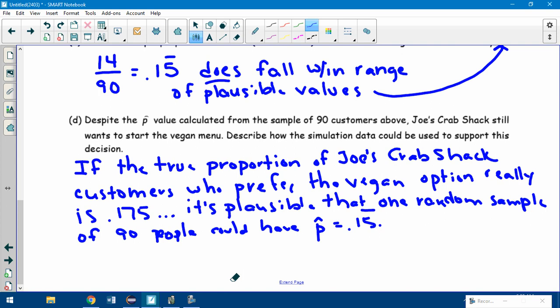This is why the simulation data could support this. If the true proportion of Joe's Crab Shack customers who prefer the vegan option really is 17.5% or 0.175, it's plausible that a random sample of 90 people could have a sample proportion or P hat value of 0.15. So that's why you shouldn't abandon this idea. If your P hat value or your sample proportion is anywhere between 0.10 and 0.26, it's very likely, or at least plausible, that the true population proportion is that 17.5%.